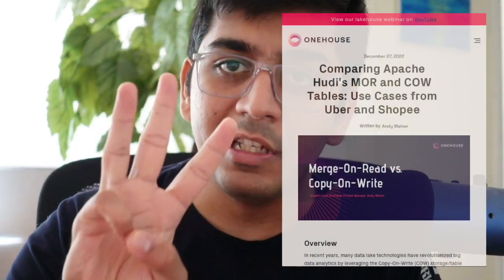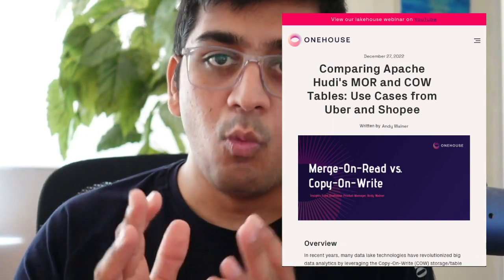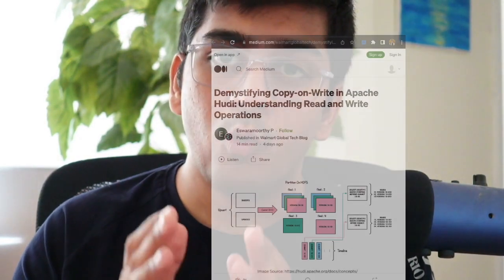With each topic in this course, for this part two on COW and MOR tables, I'm going to be listing three blog posts — by Onehouse, by Siva Balanarayan, and Walmart Global Tech on Medium. These three blogs are fantastic and explain COW and MOR tables in depth, so reading them will make your concepts even more robust. If you have any further questions on COW or MOR, post them in the comments below. Make sure to check the resource section in the description for all the links. Thank you, and I'll see you in part three.